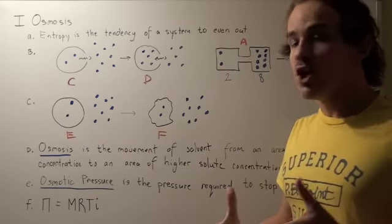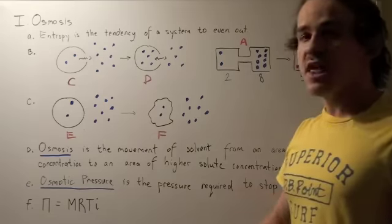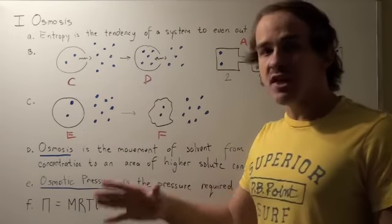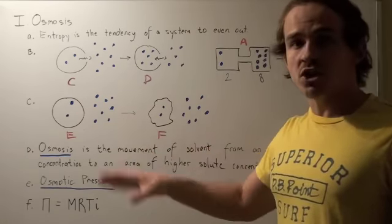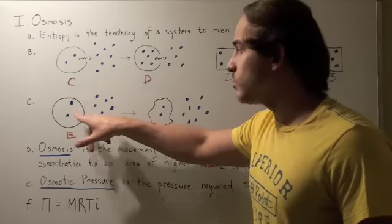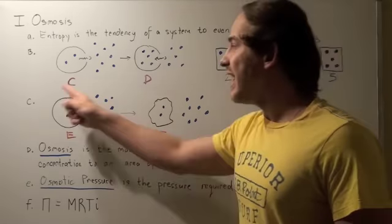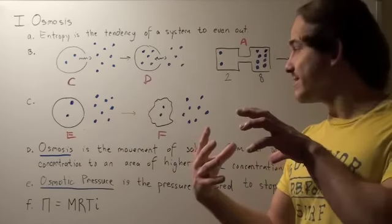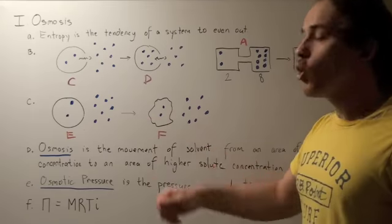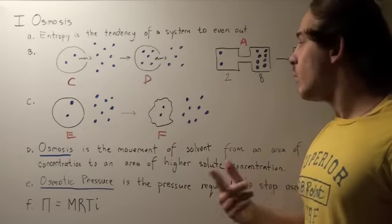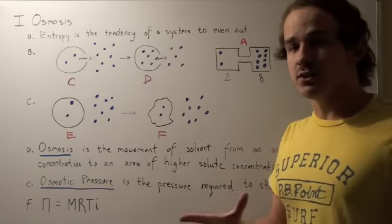So what will happen? Well, entropy tells us that in this case, the only thing that can move, which is the solvent, the water, will move. And water will travel from the inside to the outside. So our cell will shrink in size, and our concentration will increase in size, because now we have less volume but the same amount of solute.